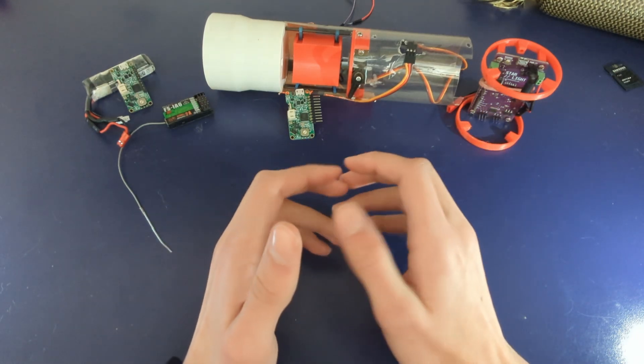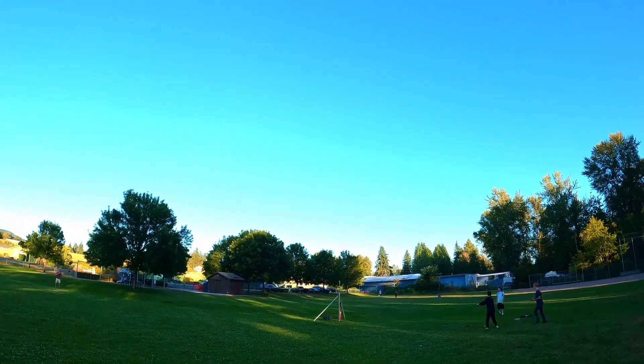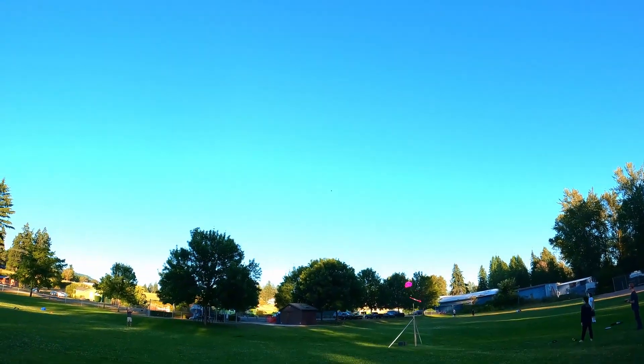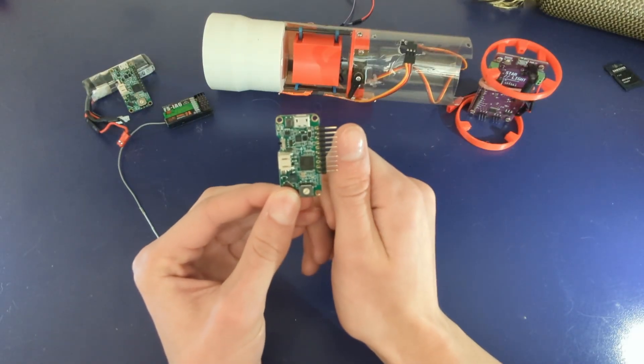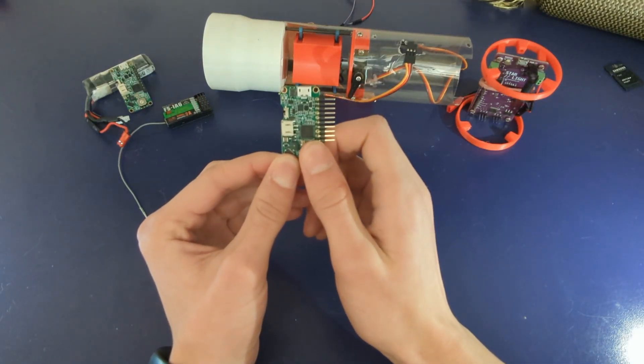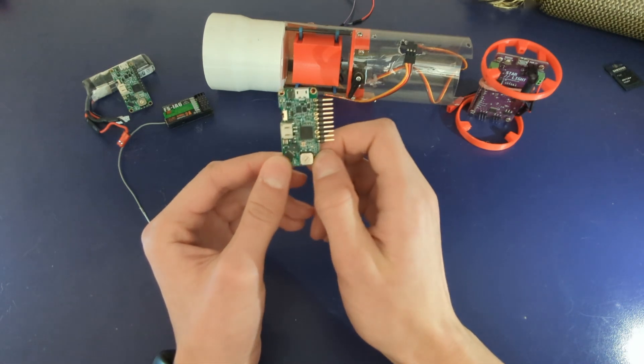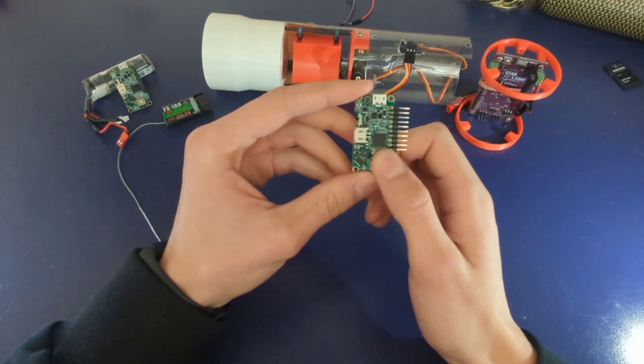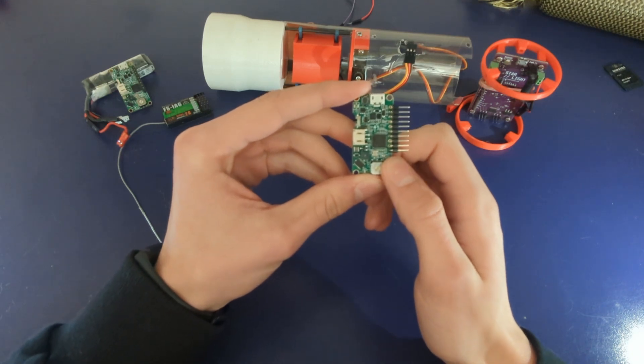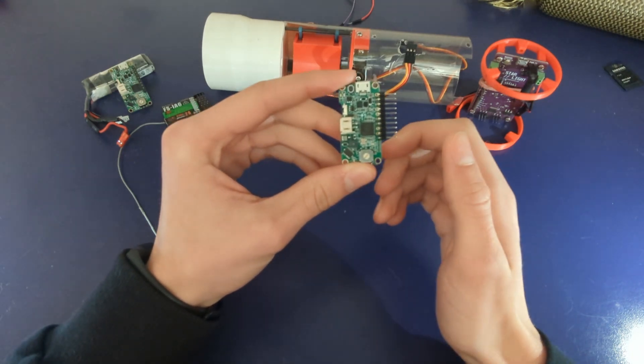The precise timing needed for, say, stage separation right at burnout would require a flight computer. To start, I got this rocket flight computer. It's very small as you can see and it can control servos by default. You can set the deployments to different times and it worked really well. This flight computer records data such as altitude and acceleration and is pretty good overall.